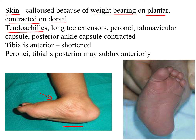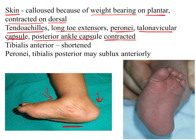The structures that are contracted include: tendo Achillis posteriorly, long toe extensors anteriorly, peronei laterally, the talonavicular capsule medially, and the posterior ankle capsule. Both the posterior and the anterior and lateral elements are all contracted.